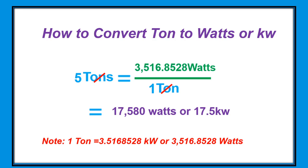Next, how to convert tons to watts. Note: one ton equals 3.516 kilowatts, or 3,516 watts. For example, 5 tons times 3,516 watts per ton — canceling the tons — gives us 17,580 watts, or 17.5 kilowatts.